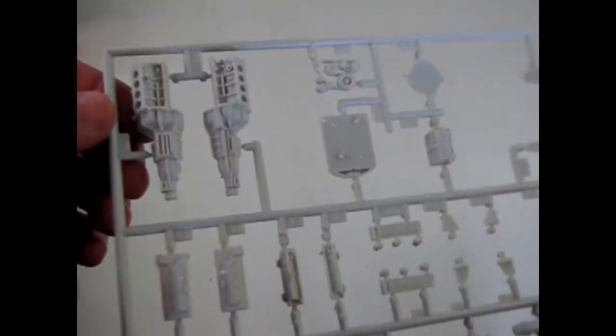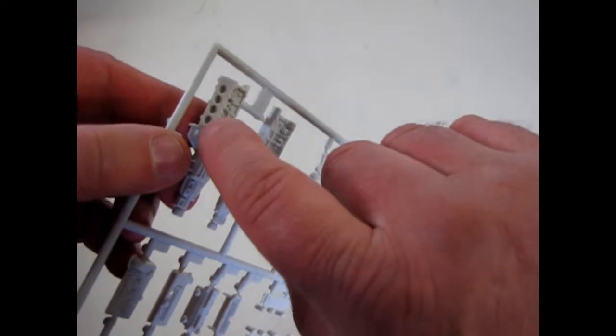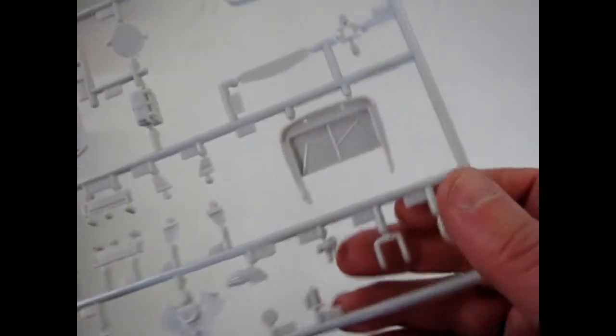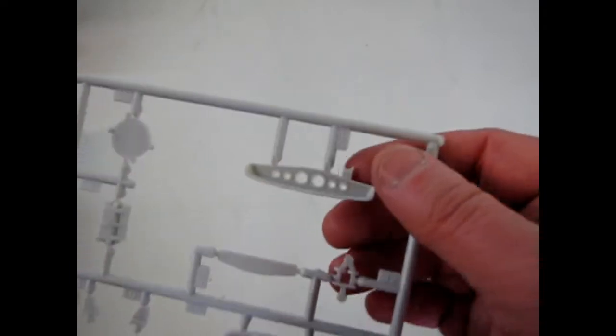And this is reminiscent of those Revell kits where they had the cylinder heads so you could see down them and the valve springs and everything. Sort of found in the Revell 57 Chevy kit of old. And there's that dashboard.